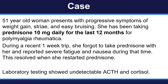Let's examine a case of a patient with glucocorticoid-induced adrenal insufficiency. This is a 51-year-old woman who presented with progressive symptoms of weight gain, striae, and easy bruising. She has been taking prednisone 10 milligrams daily for the last 12 months for polymyalgia rheumatica.